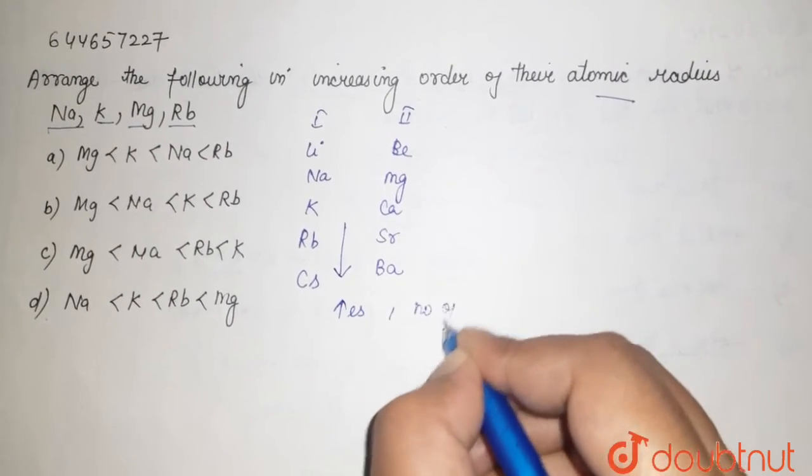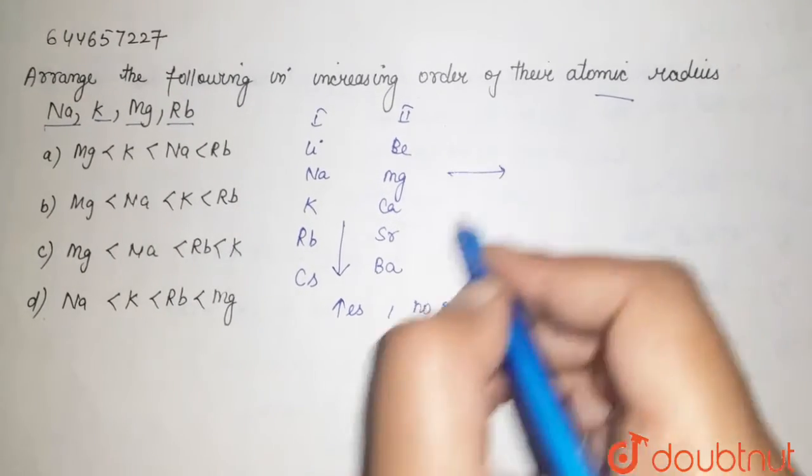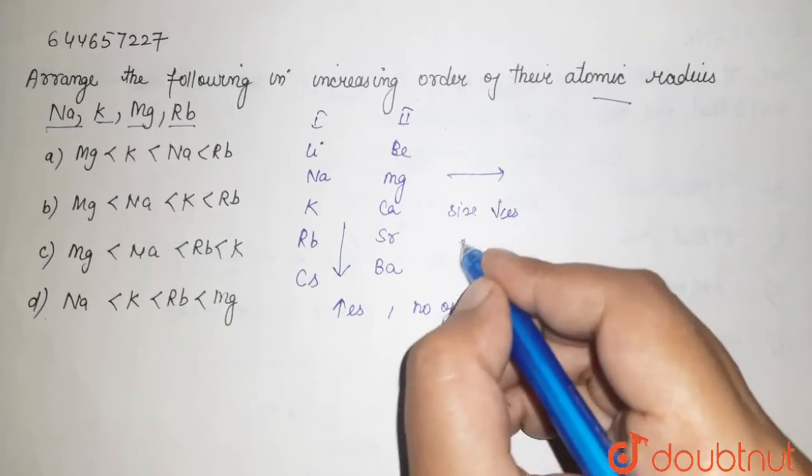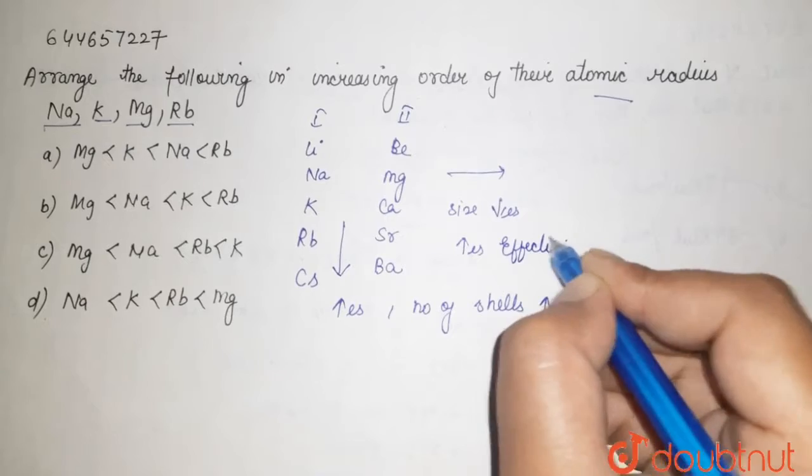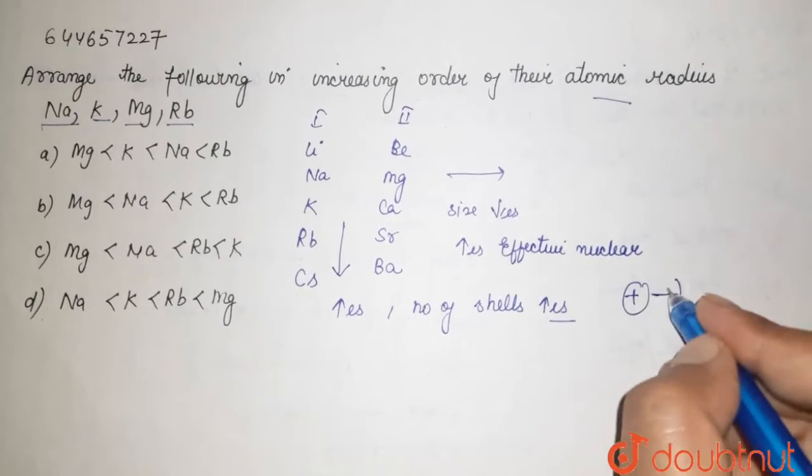And when we move along the period, your size decreases because there is increase in your effective nuclear charge. So due to effective nuclear charge, your attraction between your nucleus and the outermost shells increases, due to which your size decreases.